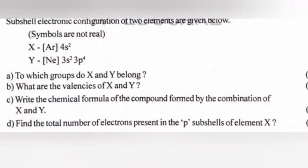20. Subshell electronic configuration of two elements are given below. Symbols are not real. X: [Ar] 4s², Y: [Ne] 3s² 3p⁴. a) To which group do X and Y belong? b) What are the valencies of X and Y? c) Write the chemical formula of the compound formed by the combination of X and Y. d) Find the total number of electrons present in the P subshell of element X.